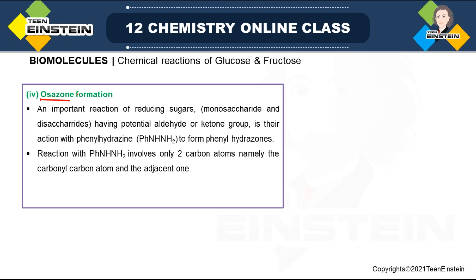When I say hydrazine, it is NH₂–NH₂, which can be written as N₂H₄. In phenylhydrazine, one of the hydrogens is replaced by a phenyl group (Ph). This is a very important reaction of reducing sugars. Remember, it is only for reducing sugars, meaning the carbohydrate molecule must have some reducing capacity.